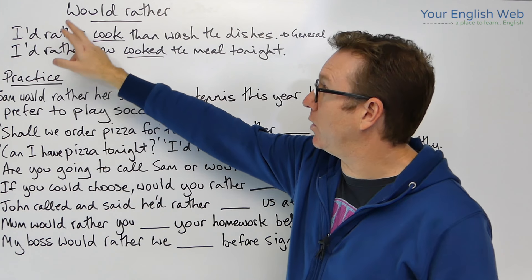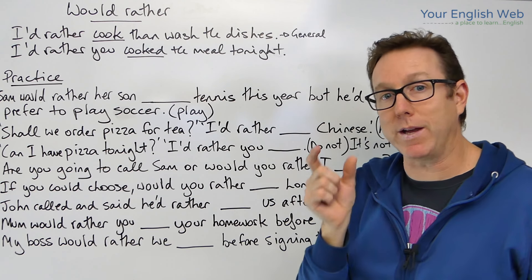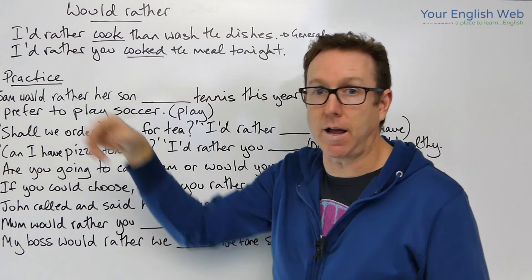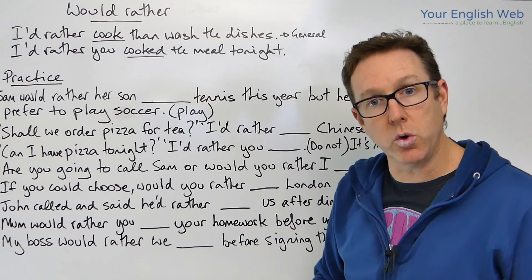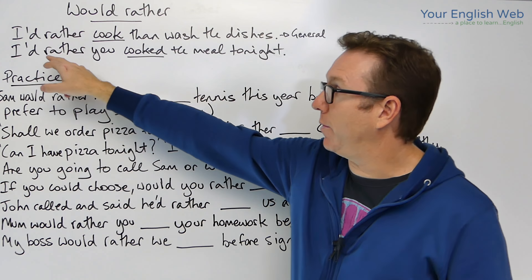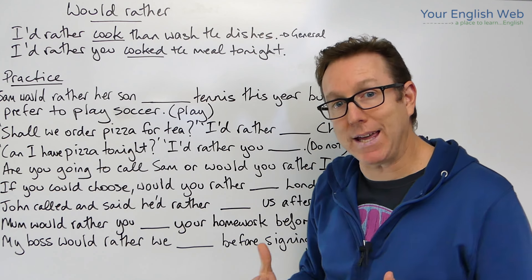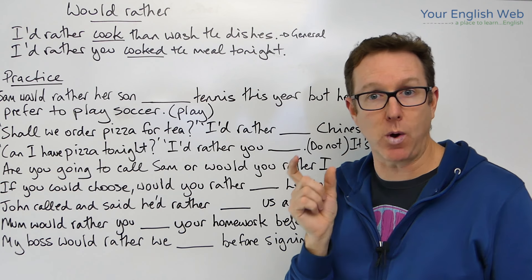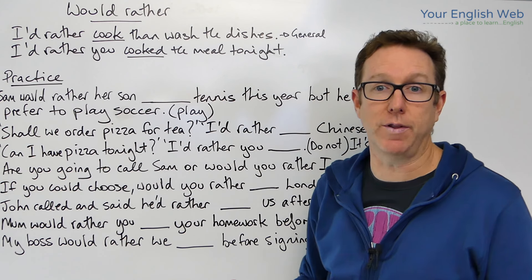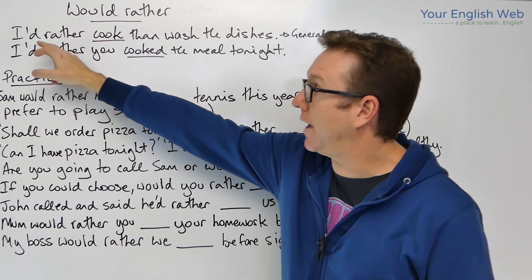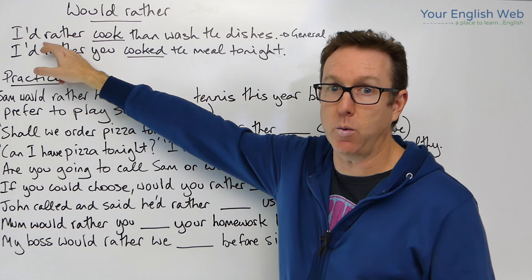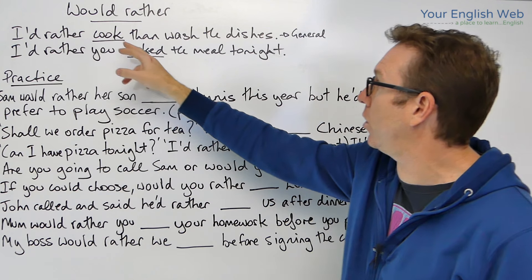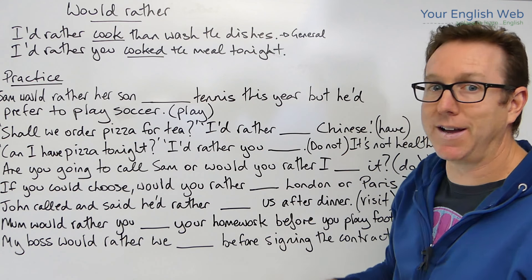When we use 'would rather,' the majority of the time we contract it, especially with subjects like I, he, she, we, you. We normally contract, and even if we're using a person's name, we normally contract it when we speak. Remember the contraction: 'I would' becomes 'I'd.'